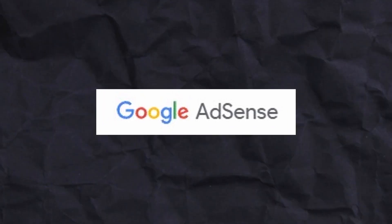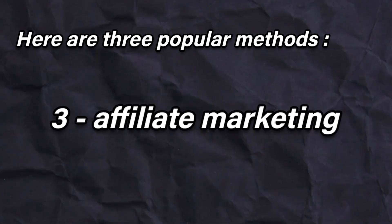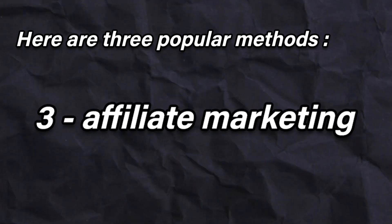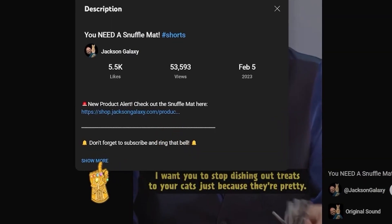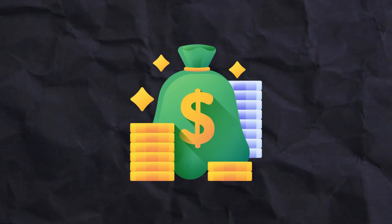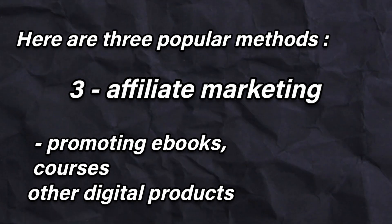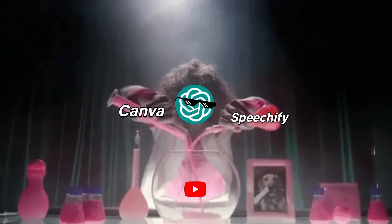You can also use Google AdSense to display ads on your website or blog if you have one. Affiliate marketing involves promoting products or services and earning commissions for any sales made through a unique affiliate link — you can include your affiliate links in the video description or as a comment. You can also combine affiliate marketing with other monetization methods such as promoting eBooks, courses, or other digital products. That is all — you now have all the steps to create an engaging and informative YouTube video using AI tools and free resources. Remember to keep your videos short, to the point, and visually appealing. Good luck and happy filming!